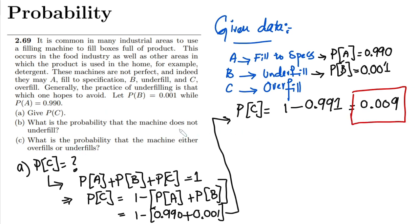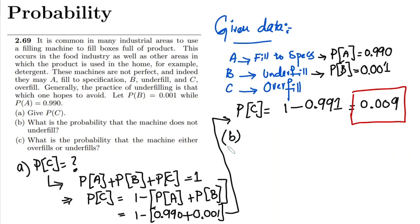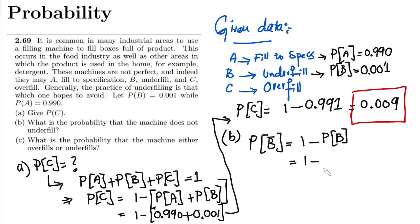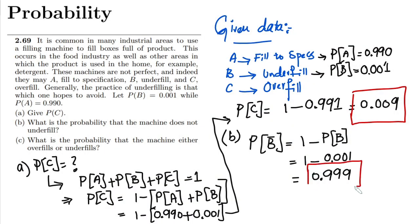Similarly, for part b, what is the probability that the machine does not underfill? The probability of underfilling is given as P(b). We want to find the probability of b complement, which is 1 minus probability of b, that is 1 minus 0.001, giving us 0.999. This is quite high because the system is very efficient.